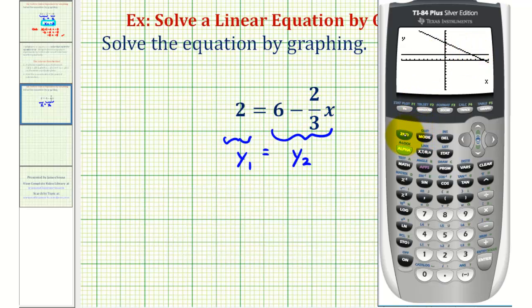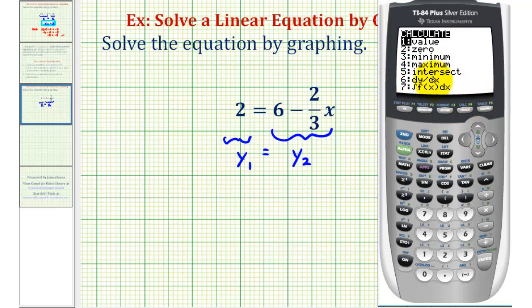So once again we'll press second trace, option 5, enter 3 times. So the point of intersection is the point 6, 2. So x equals 6 is our solution.